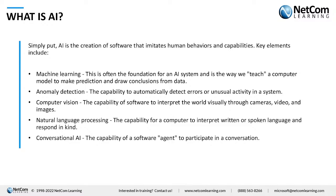Moving on, we have natural language processing — the capability of a system to interpret, understand, and comprehend any written or spoken language. The accent does not matter, the grammar does not matter. We train the system in such a way that all natural variations in anybody's language or way of speaking can be accounted for, and the system can still understand everything.